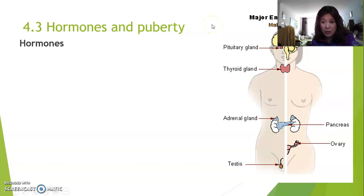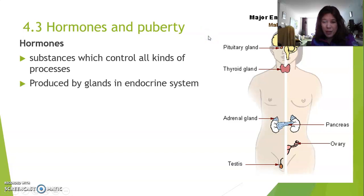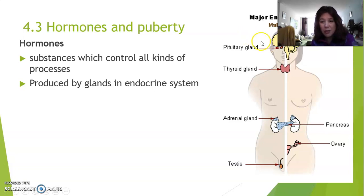Let's talk about hormones. Hormones are substances that control all kinds of processes. Hormones are produced in what we call the endocrine system. Now you may remember that we have all kinds of organ systems — some of them are the circulatory system, the respiratory system, the digestive system, the nervous system — and here we have the endocrine system, which is spread all over your body.